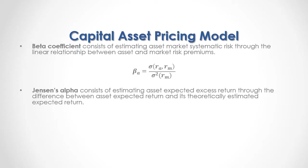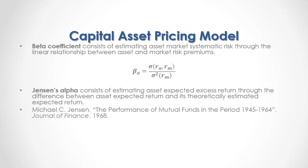Jensen's alpha consists of estimating an asset's expected excess return through the difference between the asset's expected return and its theoretically estimated expected return. For full reference, I recommend that you read Michael Jensen, "The Performance of Mutual Funds in the Period from 1945 to 1964," published in the Journal of Finance in 1968. As a formula, Jensen's alpha for the asset equals the expected asset return minus its theoretically estimated expected return through the Capital Asset Pricing Model.